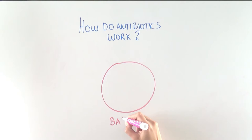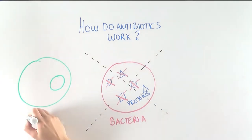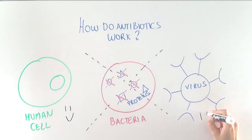They work mainly by blocking the production of some proteins in bacteria. Because of this specificity, antibiotics are really good at killing bacteria, but are relatively harmless to everything else, including human cells and viruses.